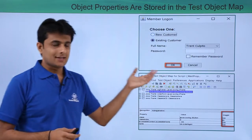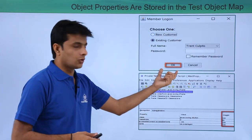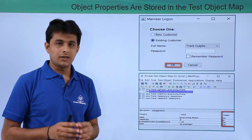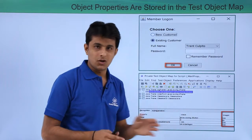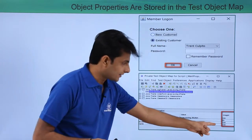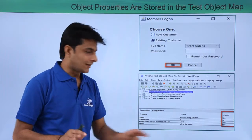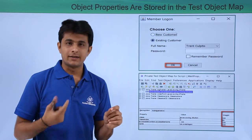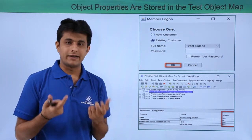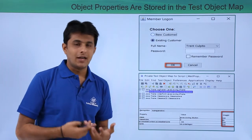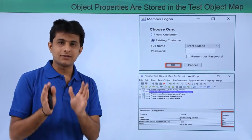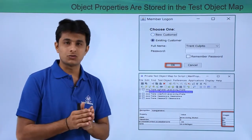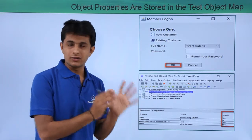Let me give an example. We have the OK button object with its properties, values, and weightages. If you add all the weightages in this example it comes to 350. Then 350 multiplied by 100 — RFT uses 100 as a standard unit by default — gives 35,000. That is the total weight score.